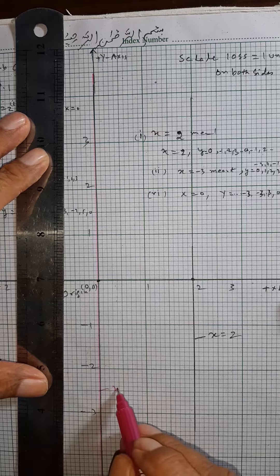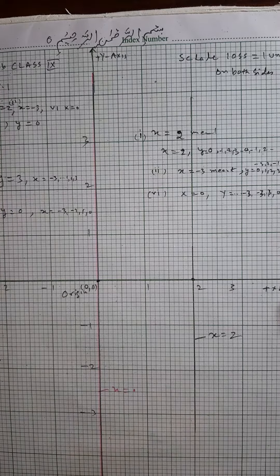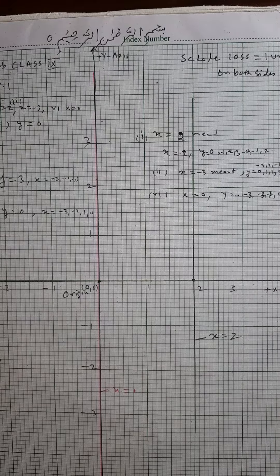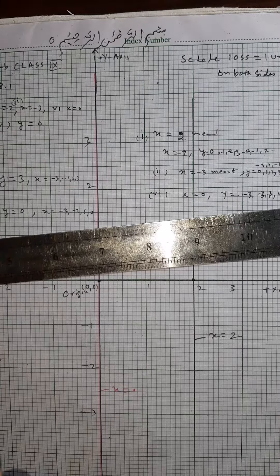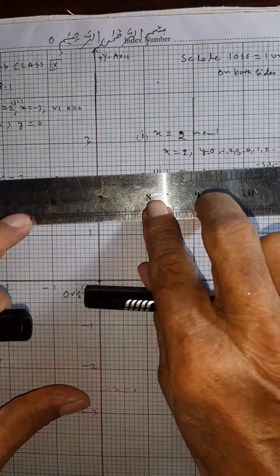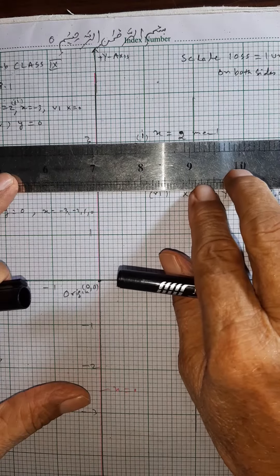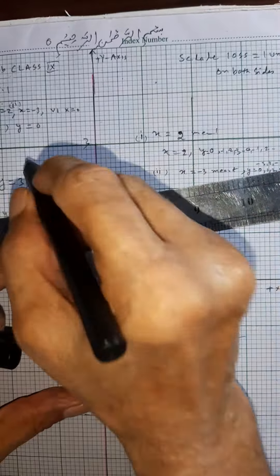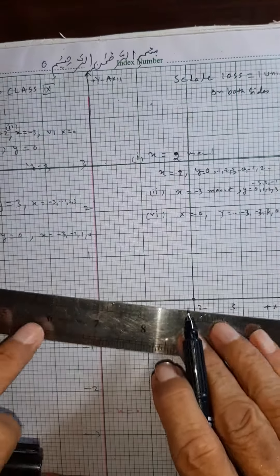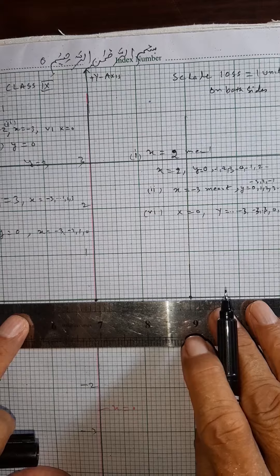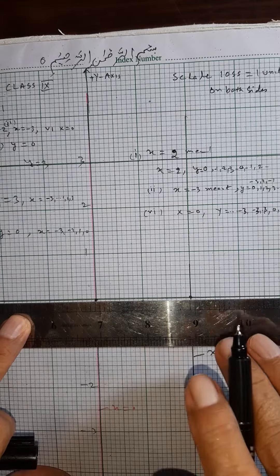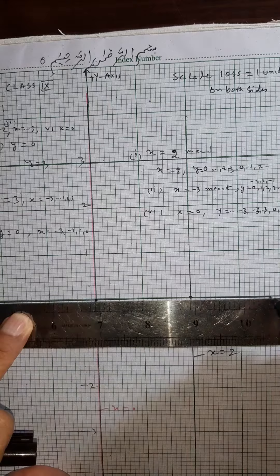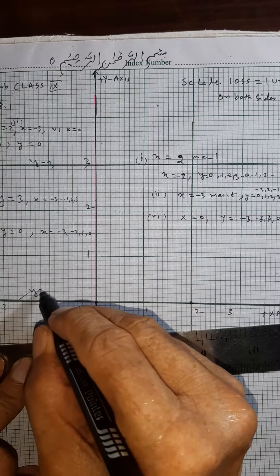Here x is equal to zero. Now we have to draw y is equal to three, and this is that line. This is y is equal to three, and y is equal to zero — this line is y is equal to zero.